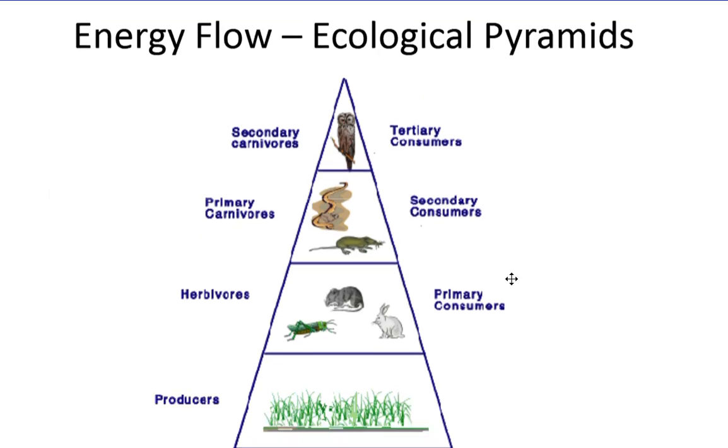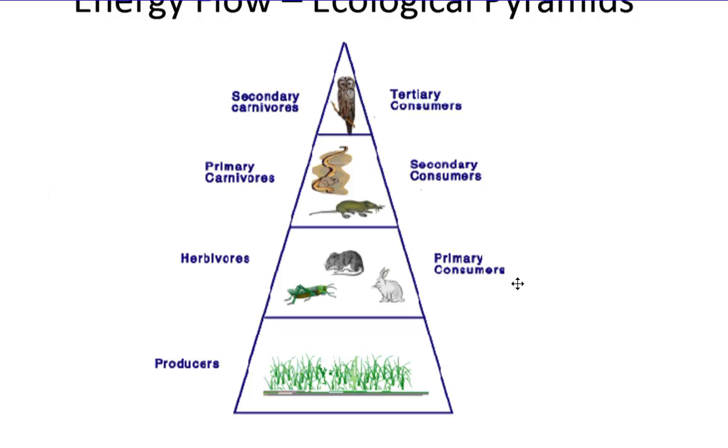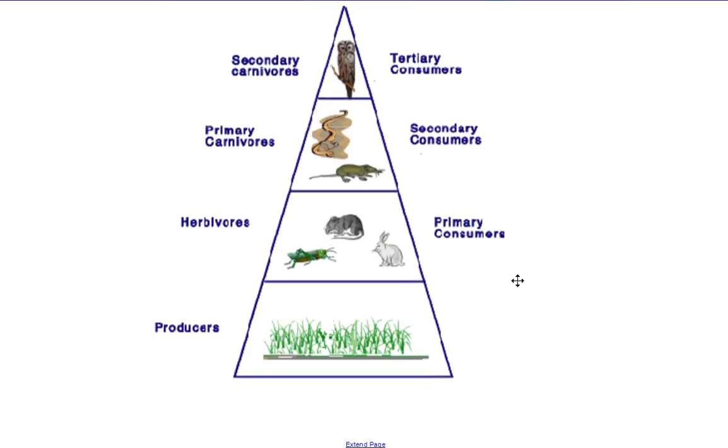These different trophic levels represent the flow of energy as it goes through the ecosystem. Energy is very abundant at the bottom of the ecosystem at the producer level. Why? Because they're getting energy directly from the sun. All that energy is fresh from the sun, it's very abundant.